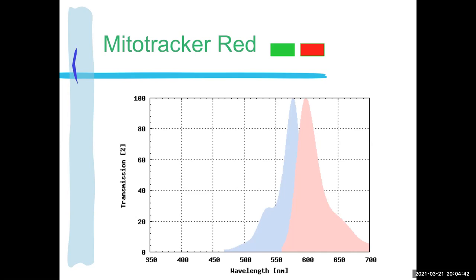MitoTracker Red is another famous fluorophore — it's actually directed to attach itself to mitochondria, which is super cool. It's a green-to-red fluorophore: you give it green excitation and it gives you red emission. You can see the shape of the curves is slightly different for different fluorophores, and again there's that Stokes shift in the twenties — the excitation and emission peaks are close, and they actually overlap.